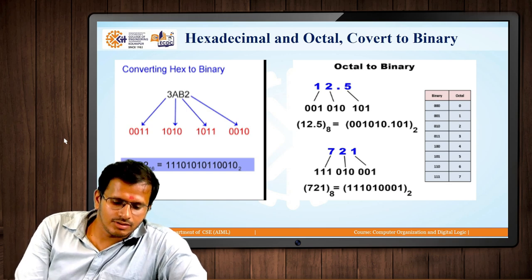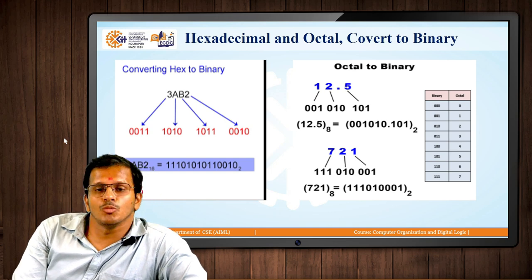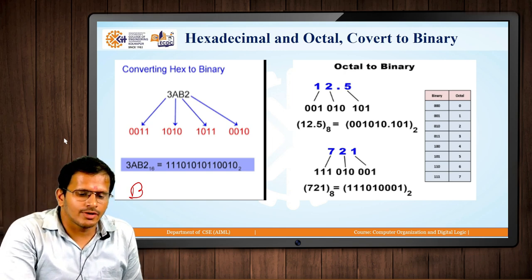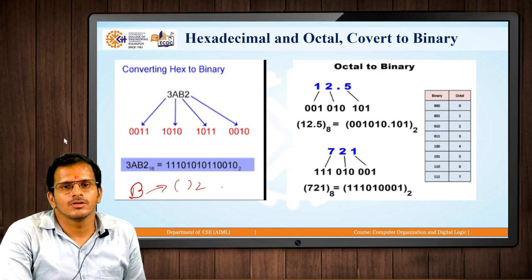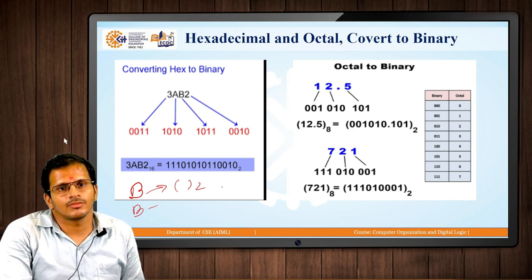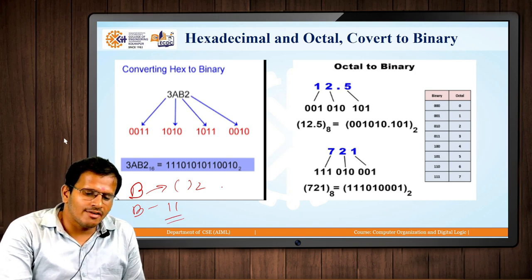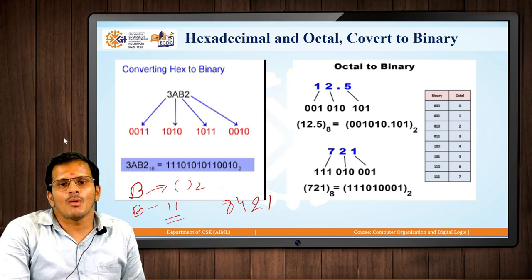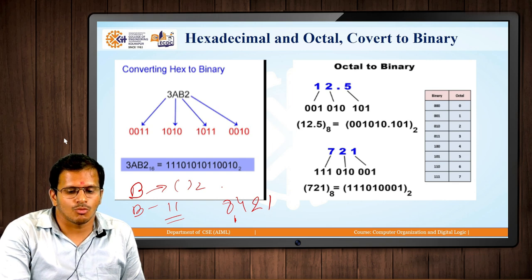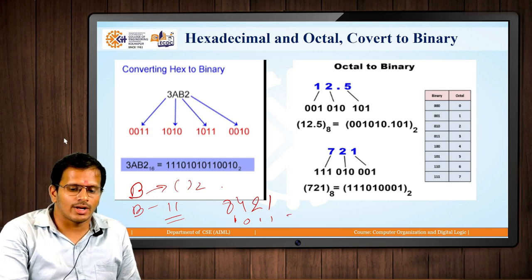For example, if we want to convert B to binary format, first we need B's value. A is 10, B is 11. Using 8421 representation, 11 is represented as 1011, because 8 plus 2 equals 10, plus 1 equals 11.